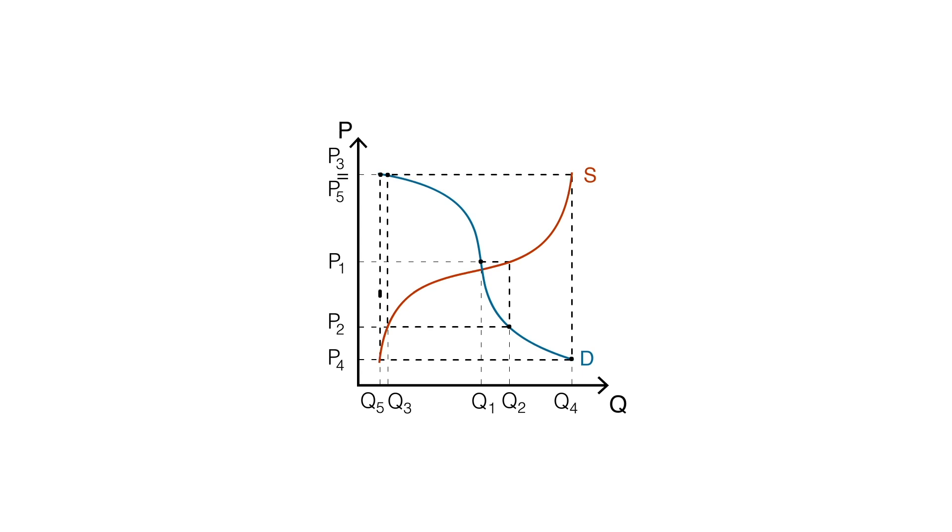However, at some point, a continuous fluctuation is reached due to the particular shape of the curves. This is called a limit cycle.